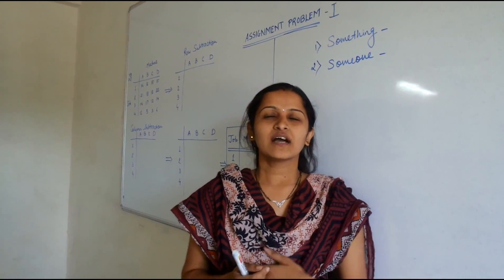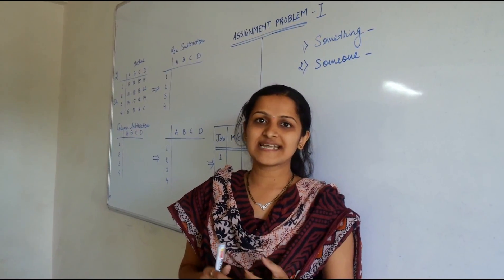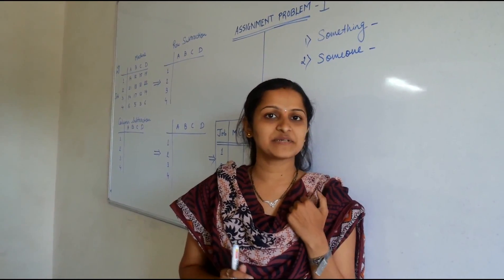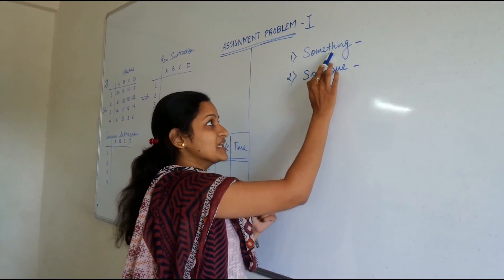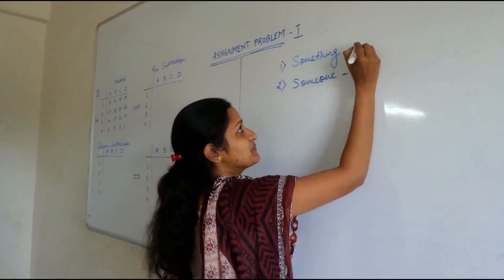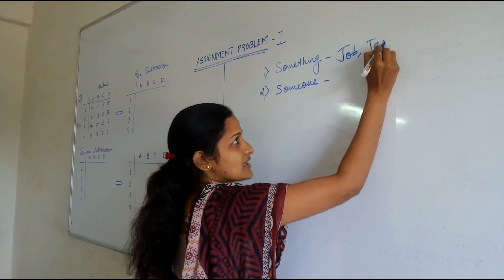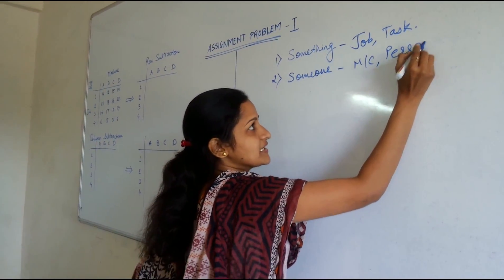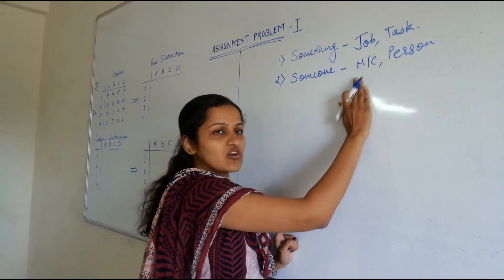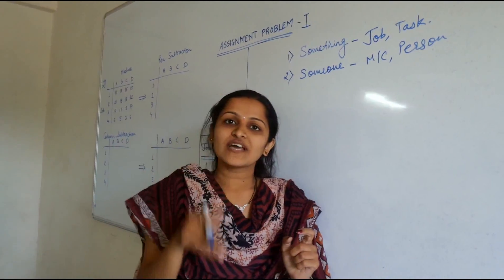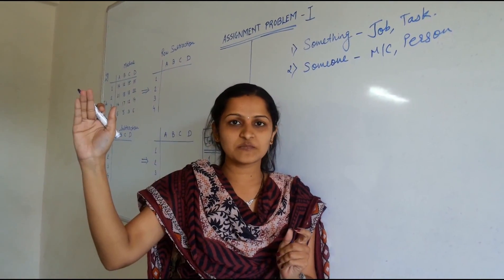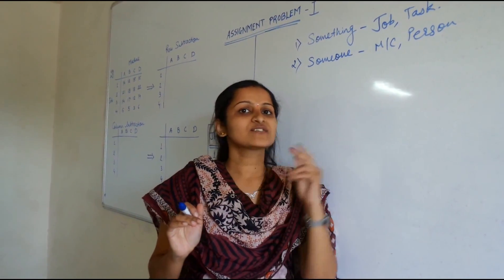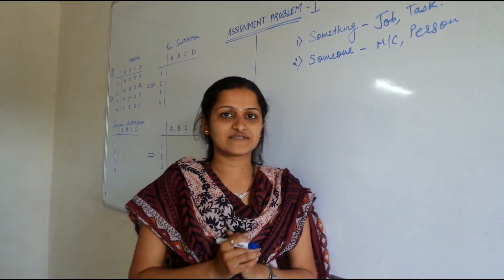Let's start with the introduction. Assignment means allotment of something to someone. These two terms are very important in assignment problem — you are going to allocate something to someone. That something can be a job or a task, and someone means it can be any machine or even a person. A job can be performed by a machine or person, and in the assignment problem you are given a number of jobs and number of machines or persons, and you have to assign those jobs to those machines to get the optimum or effective solution.